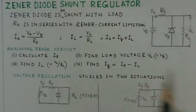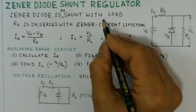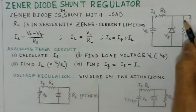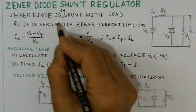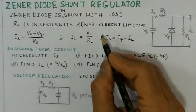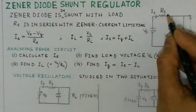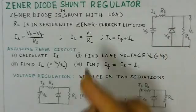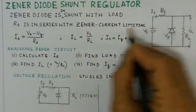We now study the zener shunt regulator. It is called a shunt regulator because the zener is connected in shunt with the load RL. RS is the series resistance, also called the current limiting resistance, because it limits the current flowing into the circuit and into the zener diode. It is referred to as the series limiting resistor.